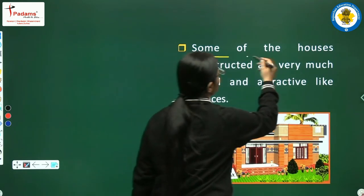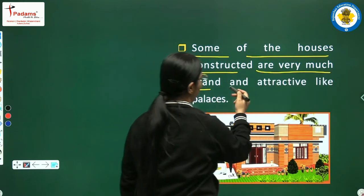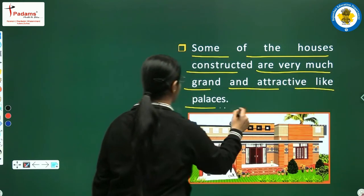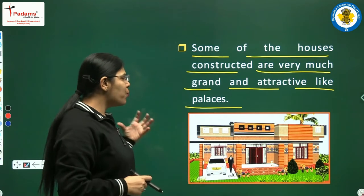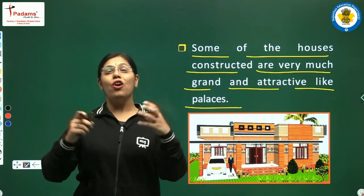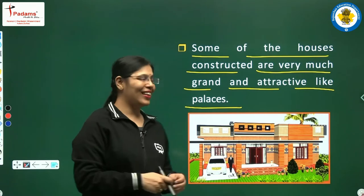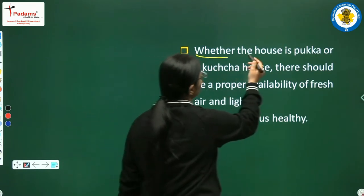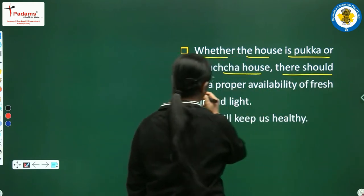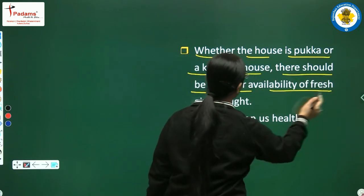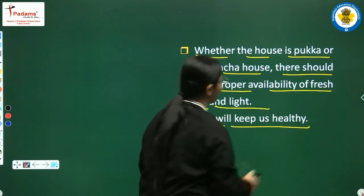Some of the houses constructed are very grand and attractive, like palaces. Kuch ghar is tarike se banaye jaate hain ki wo bahut bade hote hain, bilkul mahal ke jaise dikhte hain. Whether a house is paka or kaccha, there should be proper availability of fresh air and light, which will keep us healthy.